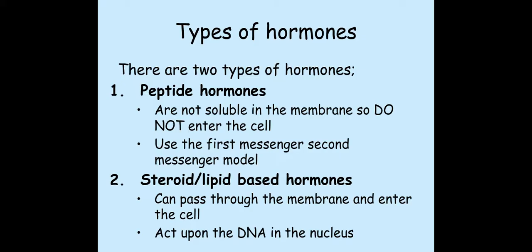Now there are two types of hormone we need to be aware of: peptide hormones and steroid hormones. A peptide hormone is a protein-based hormone. These are not lipid soluble, so they cannot diffuse straight through the phospholipid bilayer. They have to use the first messenger and second messenger model in order to impact and make changes upon the cell, which we'll look at in a minute.